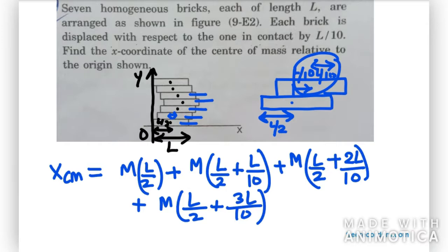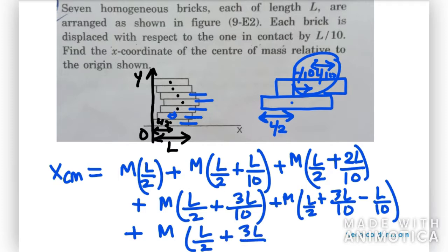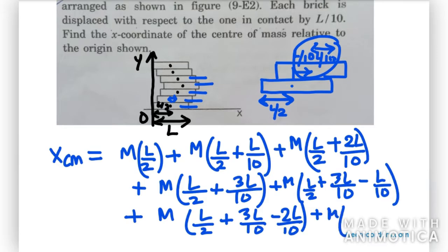Now the fifth brick has been displaced to the left, so we need to remove L/10 one time: M times (L/2 + 3L/10 - L/10). For the sixth brick it has been displaced twice to the left: M times (L/2 + 3L/10 - 2L/10). For the seventh and last brick, it has been moved thrice to the left: M times (L/2 + 3L/10 - 3L/10).